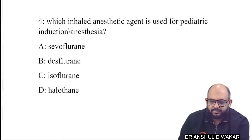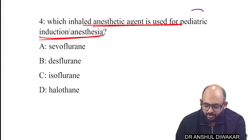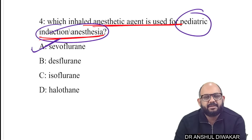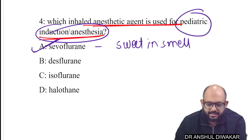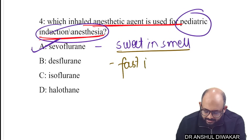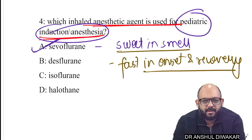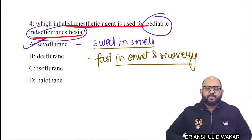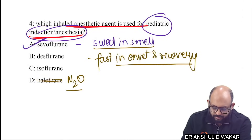The fourth and final question asked which inhaled anesthetic agent is used for pediatric induction. I call this the cute question in anesthesia. The correct answer is sevoflurane, because it is sweet in smell, fast in onset and recovery, and has no significant side effects. Even when comparing sevoflurane with halothane or nitrous oxide, you prefer sevoflurane. Nitrous oxide was one of the options, so to avoid confusion, note that sevoflurane remains the preferred agent for pediatric inhalational induction.